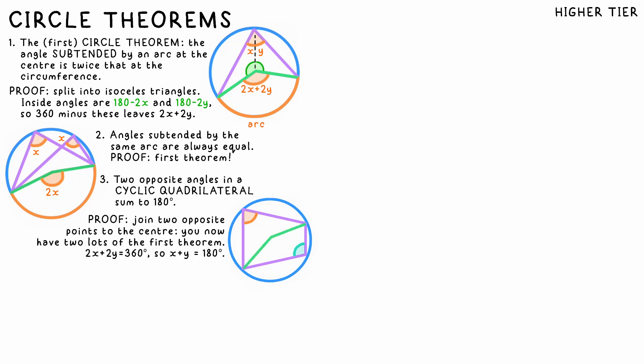The proof? Join two opposite points to the center and say the other angles are x and y. The angles on the other side must be double these, so we have 2x plus 2y around the center, which must add up to 360 degrees. So halving this, x plus y equals 180 degrees.